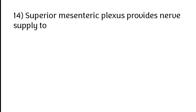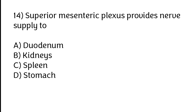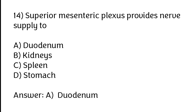Superior mesenteric plexus provides nerve supply to: A) Duodenum, B) Kidneys, C) Spleen, D) Stomach. The correct answer is option A, duodenum.